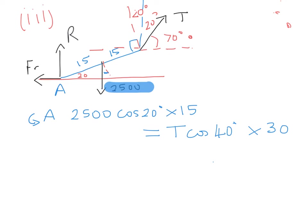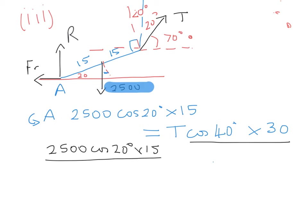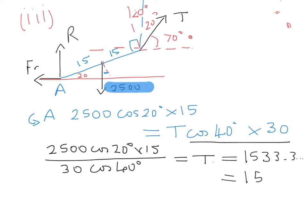That equation is worth 3 or 4 marks. Solving: 2500 cos 20 × 15 = T cos 40 × 30. Dividing both sides by 30 cos 40 gives T = 1533.3... Newtons, which to 3 significant figures is 1530 Newtons. That's part 3 of the question.